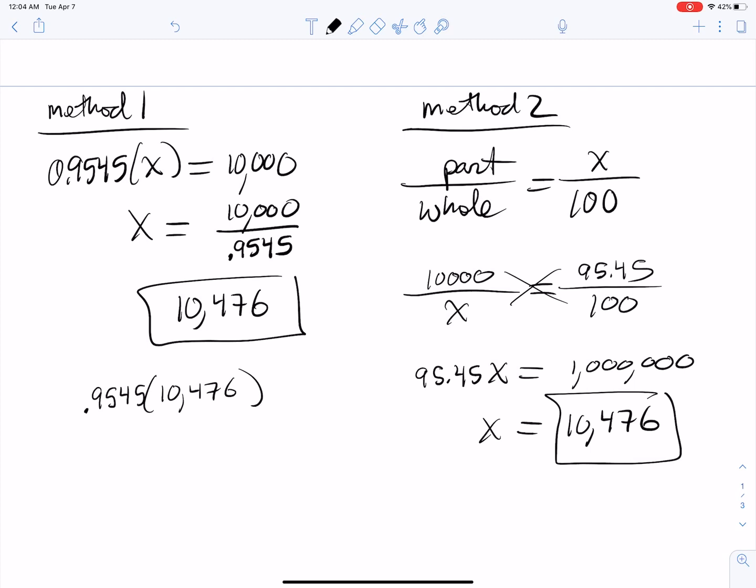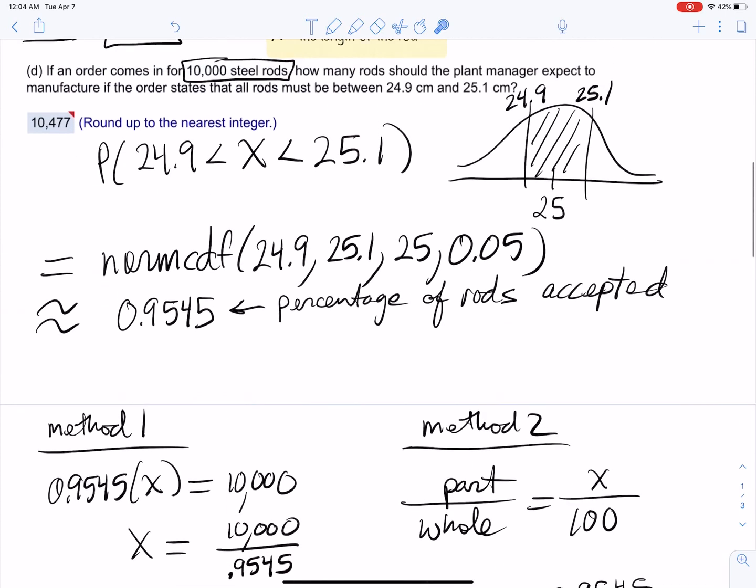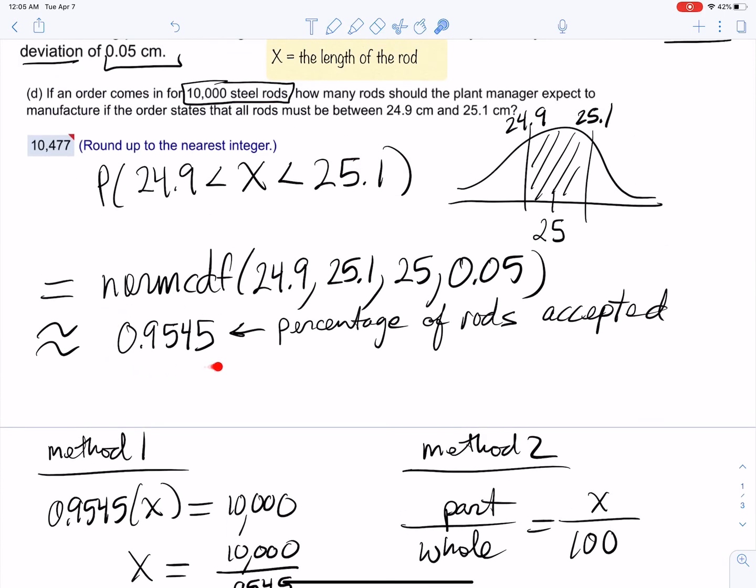Just to recap: you need to produce 10,476 steel rods if you want to end up with 10,000 useful rods. You're going to throw out about 476. Why? Because 95.45% of the rods are going to be accepted and the other ones are going to be rejected.